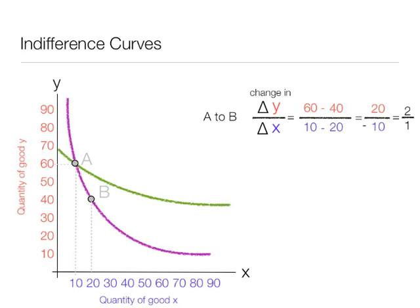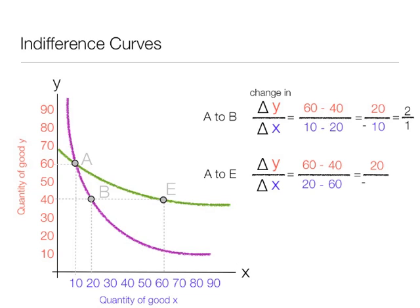Now we have points A and B. Let me put in another indifference curve, this green one, to show you the difference when it is flat. The indifference curve is flat. I am going to add another point, point E. Now if we move from A to E, it is 60 minus 40 divided by 20 minus 60. 20 divided by 40, negative 40. And that equals to negative, or just 1 half, right? What this means is the consumer values y more than x, the green indifference curve, versus the purple indifference curve.